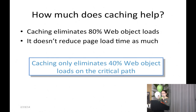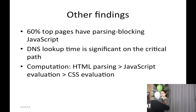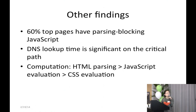There are also other findings. We find that 60% of the top pages have parsing-blocking JavaScript, whereas we would hope that parsing-blocking JavaScript should be eliminated. We also break down the network time on the critical path and find that DNS lookup time is significant. Further breaking down computational time on the critical path, we find time is mostly spent on HTML parsing, some on JavaScript evaluation, and very little on CSS evaluation.